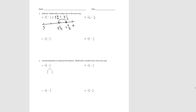Pause the video and try B. For B, let's show the arrow way. We're going to start with 4 and 7 tenths and subtract 3 tenths. 7 tenths minus 3 tenths is 4 tenths, so we'd have 4 and 4 tenths, which we could simplify to 4 and 2 fifths. If you did this with the number line instead of the arrow way, that's fine too, as long as you got the correct answer.